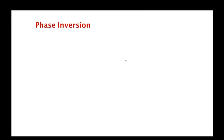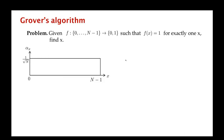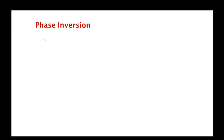It turns out that the quantum algorithm to do this has two different primitives that it relies on. The first primitive is what's called phase inversion. Let's say that f(x*) equals 1 — that's the unique x such that f(x) equals 1. This is the item that we are searching for. We start with some superposition, the sum over all x of α_x |x⟩.